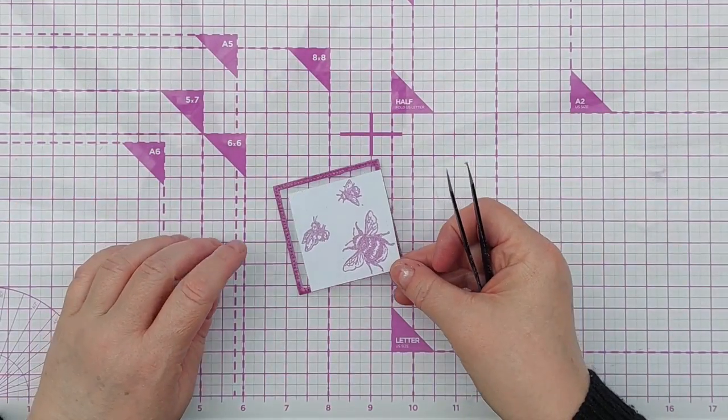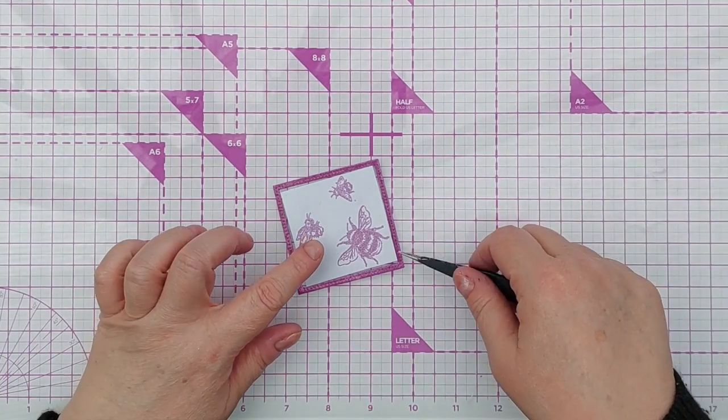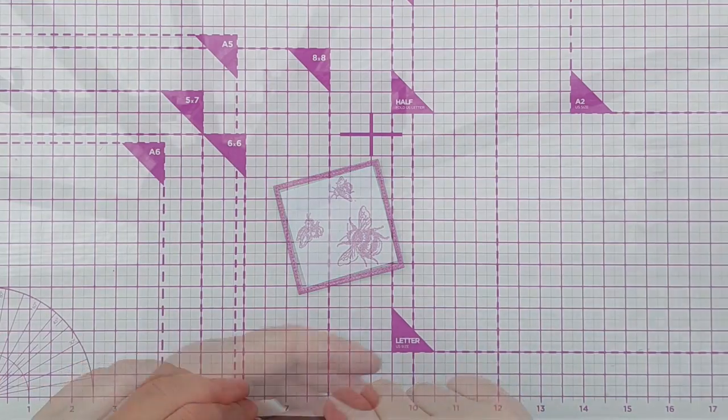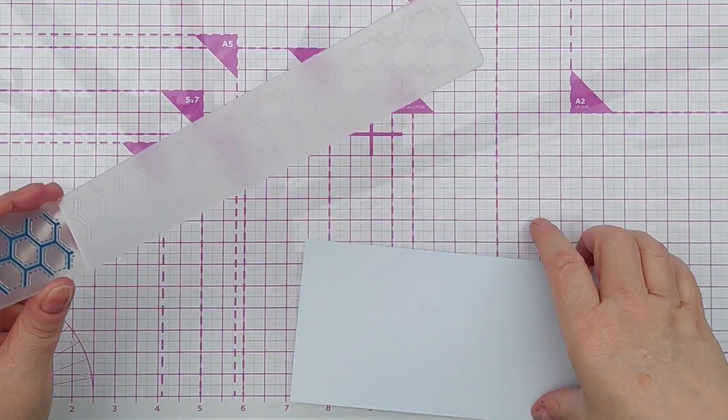Now I've got my frame and my bee panel. I'm going to do a little bit more to the bee panel in a minute because it's looking a little bit empty. But before I do that I'm going to prepare the front panel on my card.